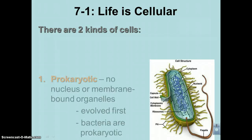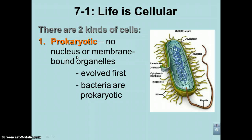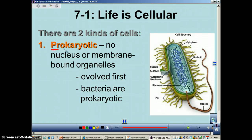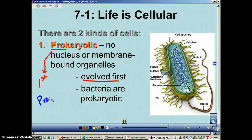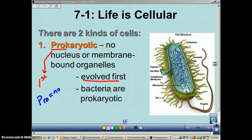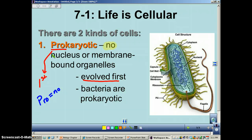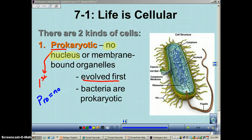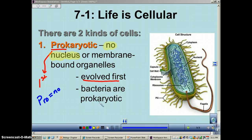The first type of cell is called a prokaryotic cell. The prefix 'pro' technically means first, because these were the cells that evolved first on this planet. An easy way to remember it: pro means no — prokaryotic cells have no nucleus. So prokaryotic cells have no nucleus and no membrane-bound organelles. Remember, all bacteria are prokaryotic cells — you could also say prokaryotic cells are all bacteria.